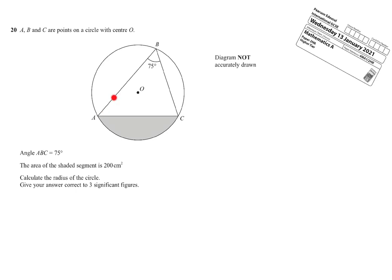In this question we're presented with a triangle where the points A, B, C are on the circumference of a circle, center O. We have one angle on the triangle. We have a shaded segment here which has an area that we're given as 200 centimeters squared.